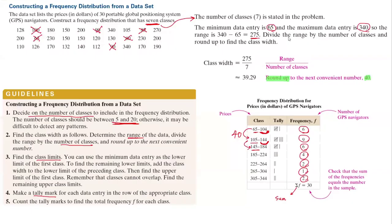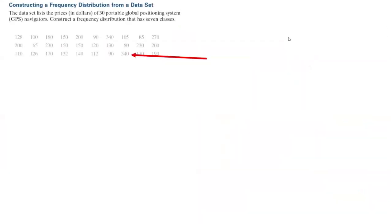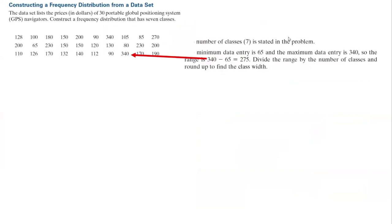Pay attention here everyone. You had 30 data in your collection. This 30 must be exactly the same as the summation of all frequencies. Now in constructing the data set...